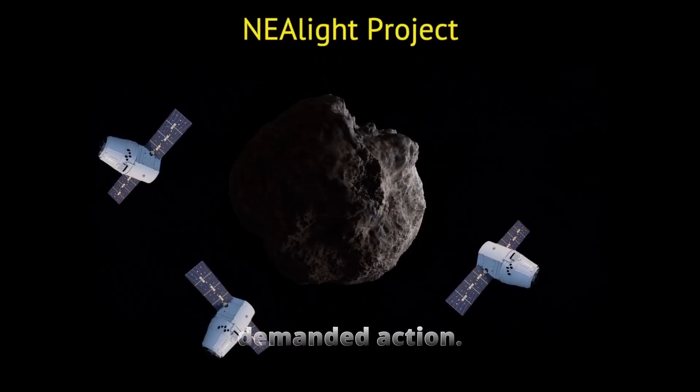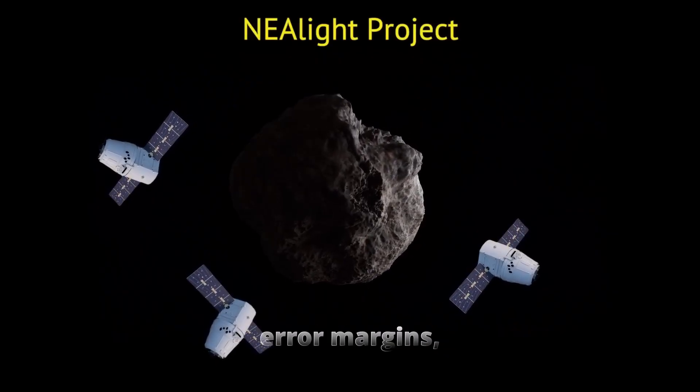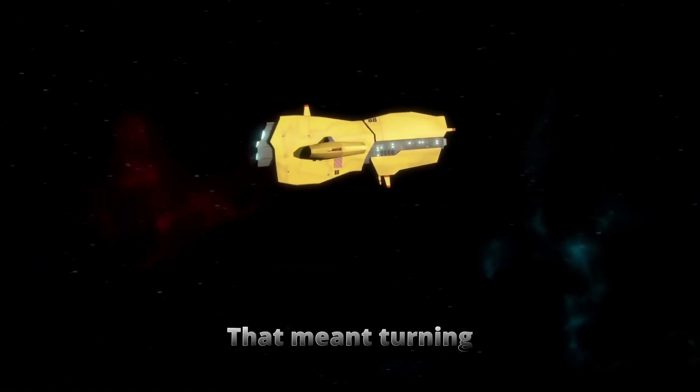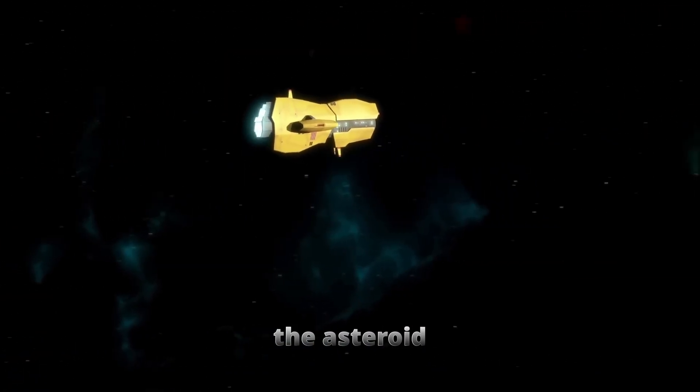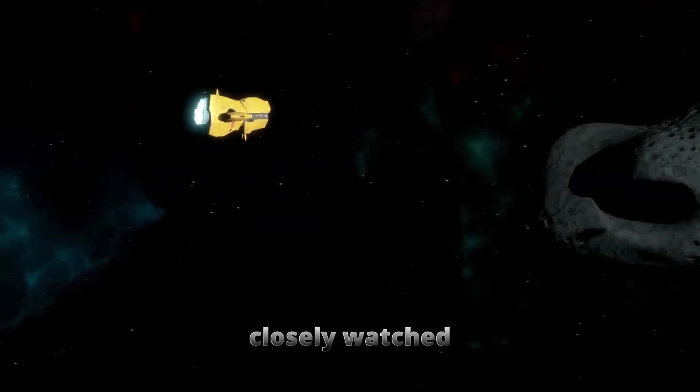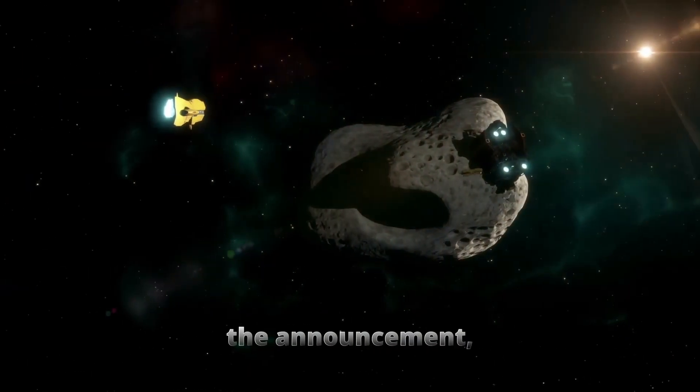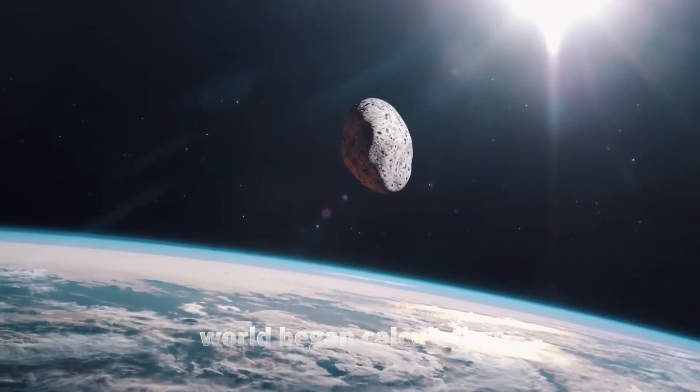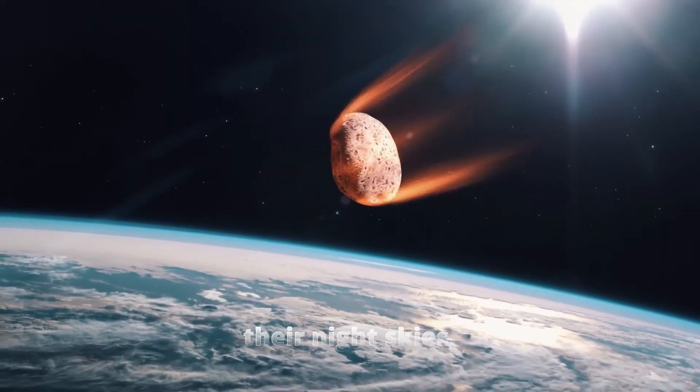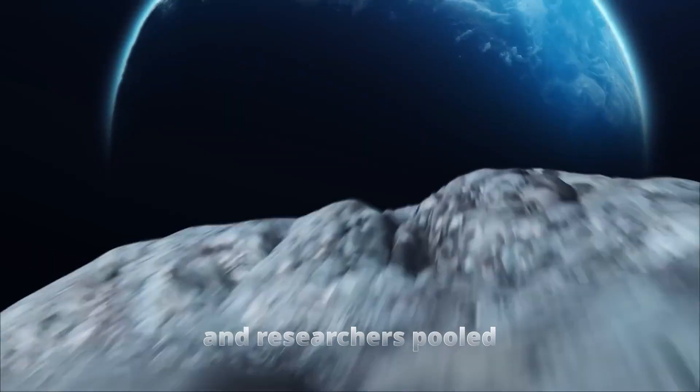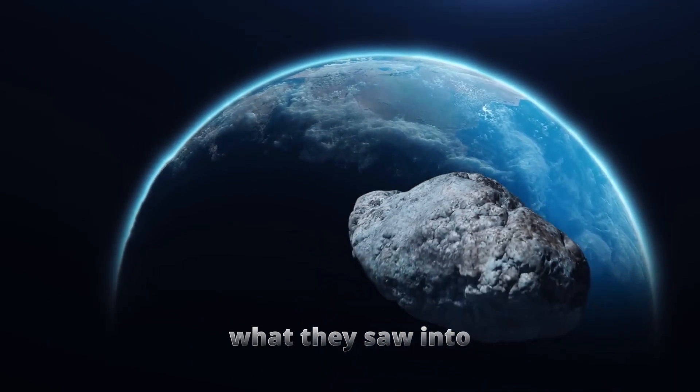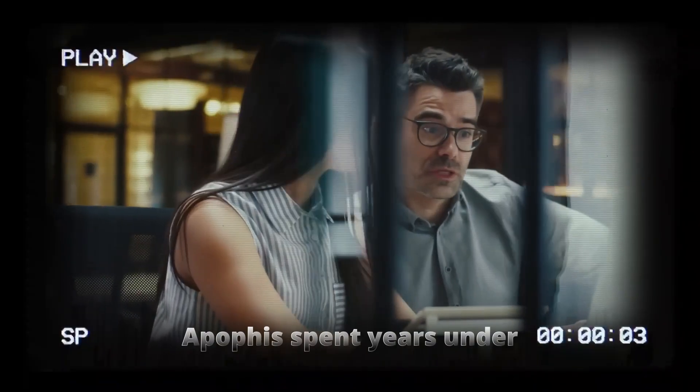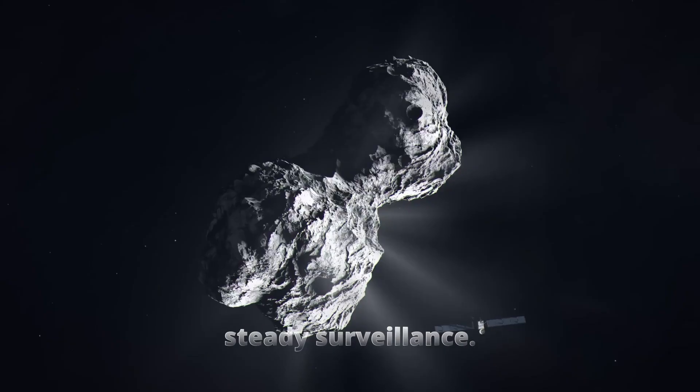The uncertainty demanded action. To shrink the error margins, astronomers needed many more precise measurements of Apophis's position over time. That meant turning the asteroid into one of the most closely watched objects in the sky. Within weeks of the announcement, observatories around the world began calculating times to catch it as it crossed their night skies, and researchers pooled what they saw into shared databases. Between 2005 and 2013, Apophis spent years under steady surveillance.